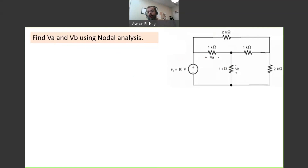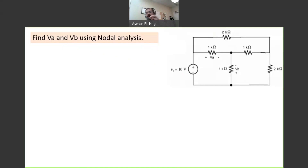So what is the first thing we do in Nodal? We need to select a reference. We said that when we have independent current sources, there is no difference between node A and node B. However, when we have a voltage source, it makes a difference. By properly selecting the grounding point, you can make the problem relatively easier. As a rule of thumb, we select the node connected to the negative side of the voltage source. So this node will be our reference.